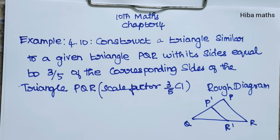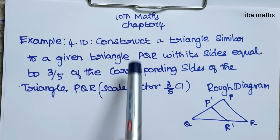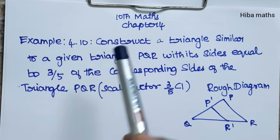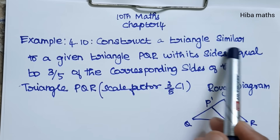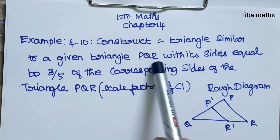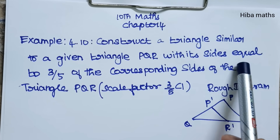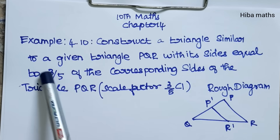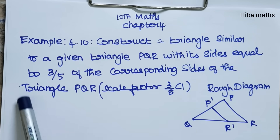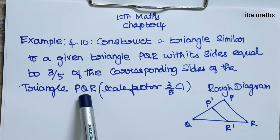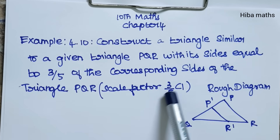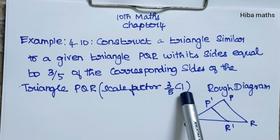Hello students, welcome to Hibamax, 10 Standard Math Chapter 4. Example 4.10: Construct a triangle similar to a given triangle PQR with its sides equal to 3 by 5 of the corresponding sides of triangle PQR. The scale factor is 3 by 5, which is less than 1.